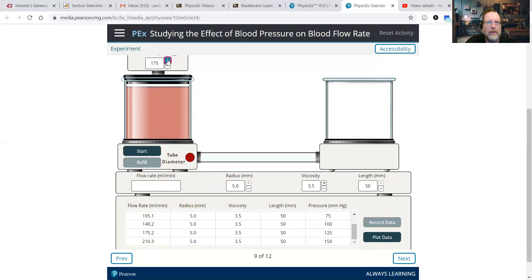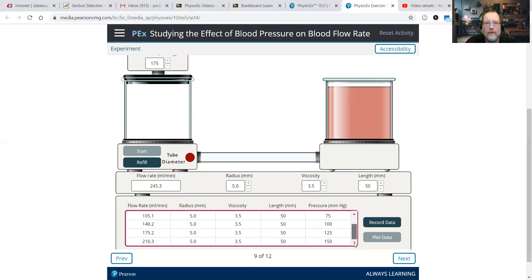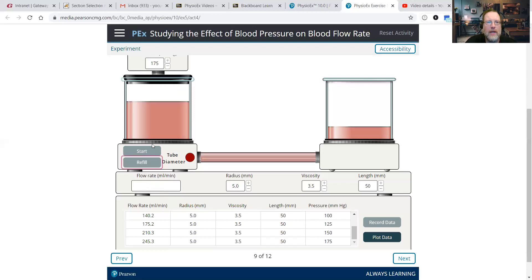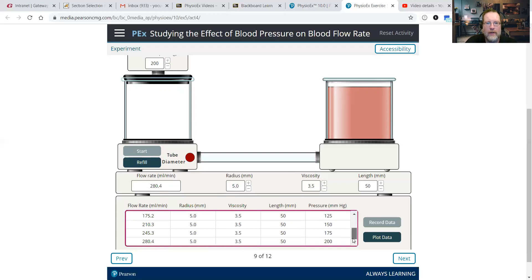Okay, refill. We're going to increase the pressure up to 175. So we should see this go up to about 245. And sure enough, record data. And that's what we see, which we can also see here. And then our last one, we're going to go to 200. So we should probably see something in the range of around 280. 35 more than 245 is 280. So there we go.